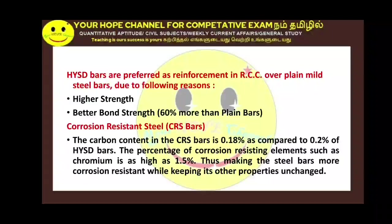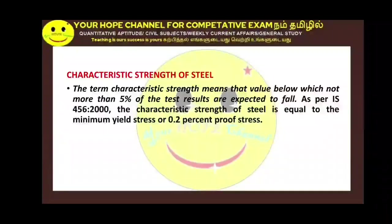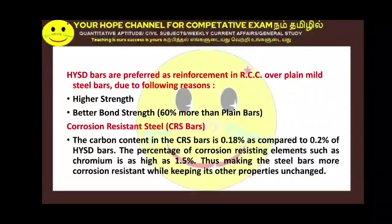While using mild steel versus deformed bars, you would also reduce the cost of construction. So the cost of construction is low. This is high yield strength deformed bar — if you call HYSD, you can call it FE415 or FE500.